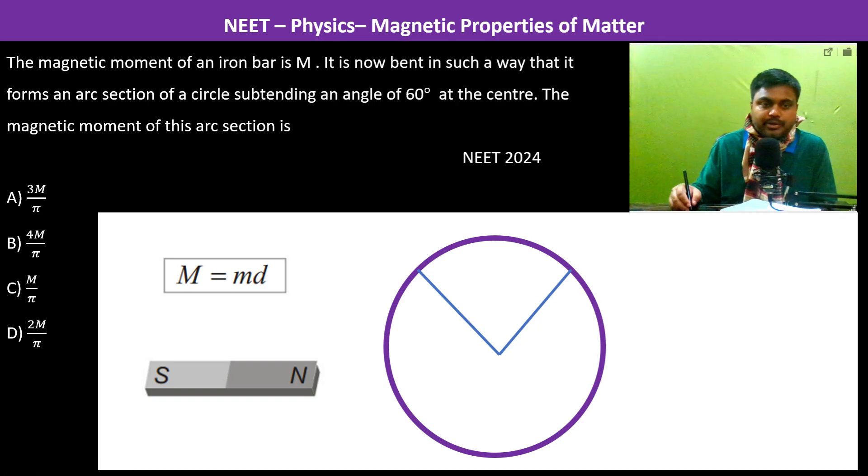The magnetic moment is m into d, where m is the strength of the poles. North is plus m, south pole is minus m, and d is the distance between the two poles, which is north pole and south pole respectively.